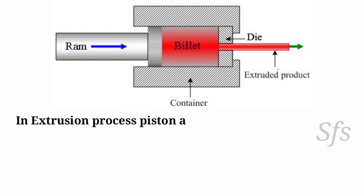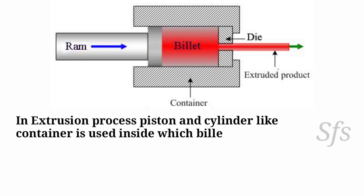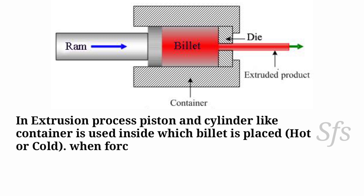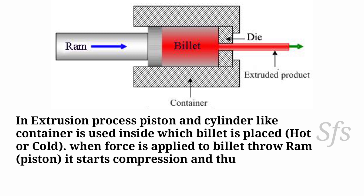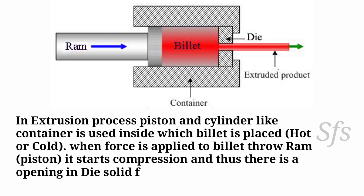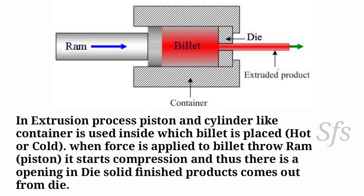In the extrusion process, a piston and cylinder-like container is used, inside which the billet is placed. The billet may be hot or cold. When we use a hot billet it requires less force, and when we use a cold billet it requires more force compared to the hot billet.